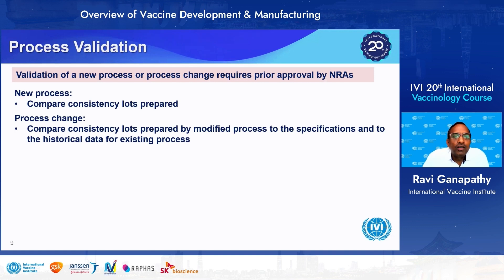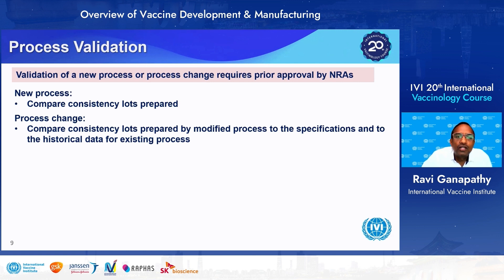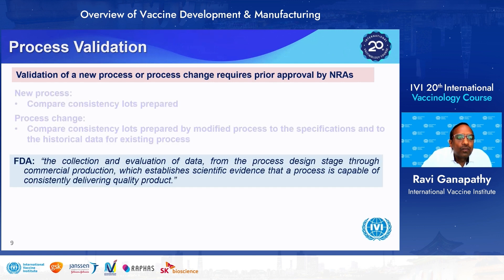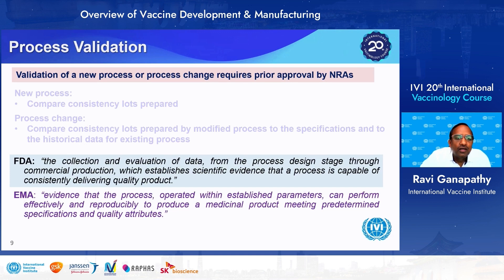Validation is an important term in vaccine development and commercialization. It has two components: new process validation, where you compare the consistency of lots produced with defined process parameters against defined critical quality attributes; and process change validation during post-approval, which compares consistency of lots produced with the existing process versus the modified process to ensure they all meet specifications and are comparable. FDA defines it as the collection and evaluation of data from the process design stage through commercial production, establishing scientific evidence that a process is capable of consistently delivering a quality product.